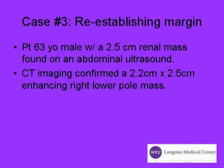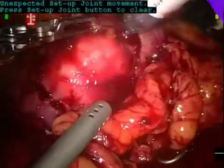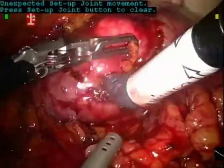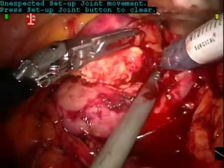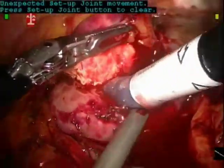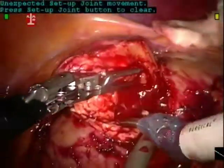Case number 3: re-establishing margin. The patient is a 63-year-old male with a 2.5cm renal mass found on abdominal ultrasound. CT imaging confirmed a 2.5cm enhancing right lower pole mass. As the excision proceeds, some bleeding is encountered.